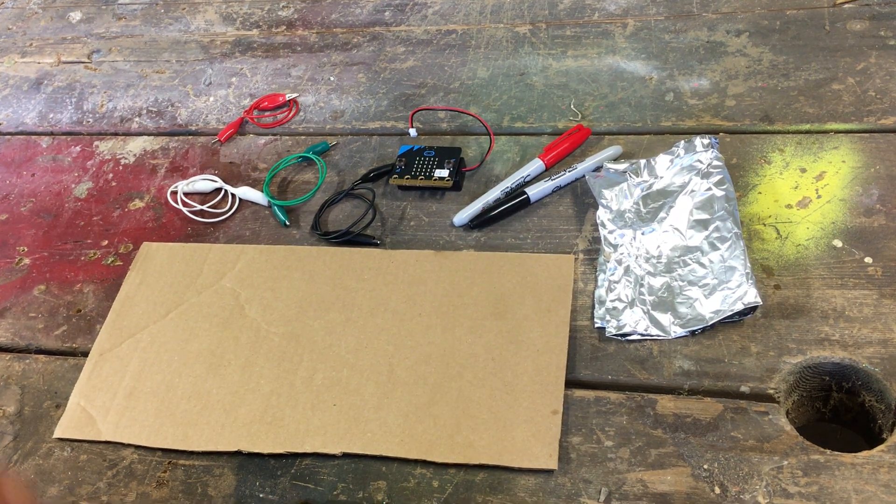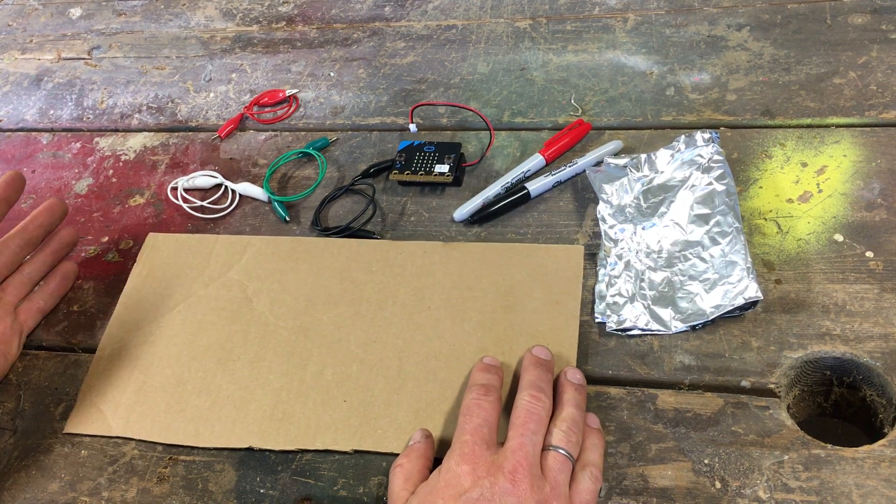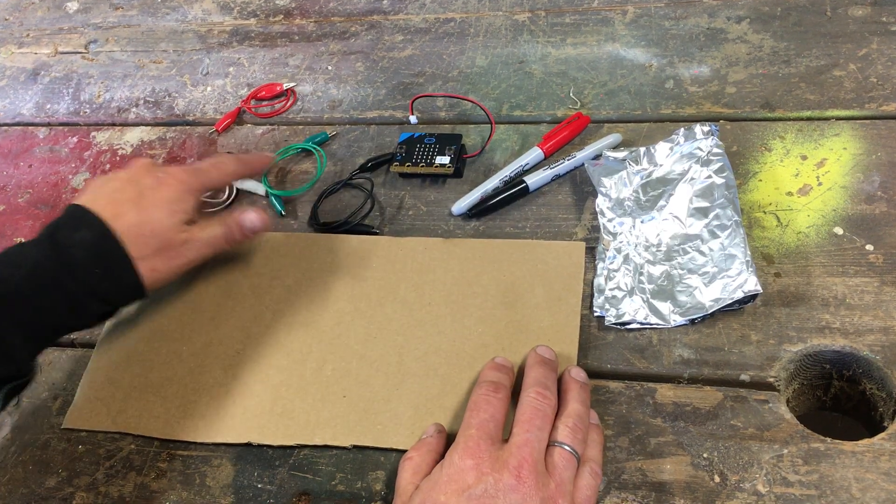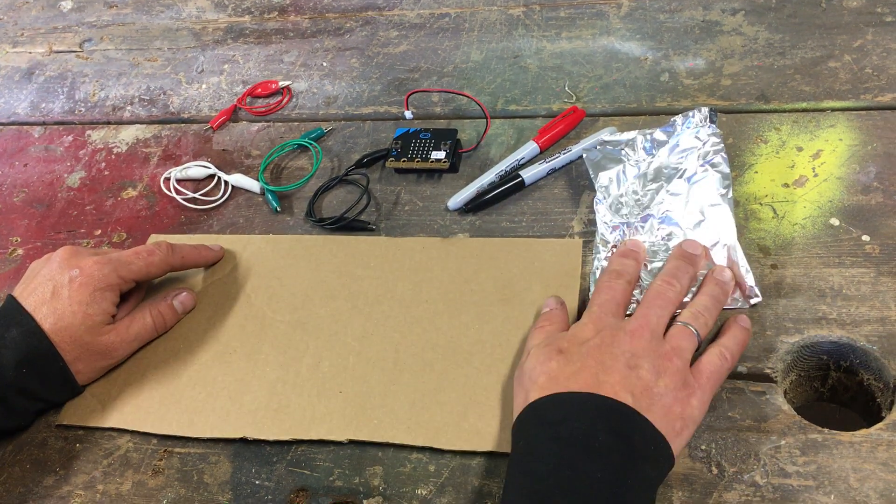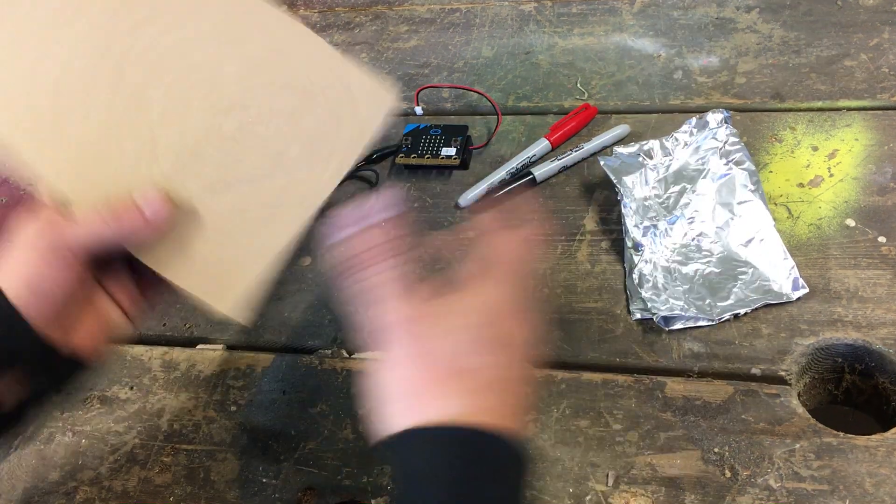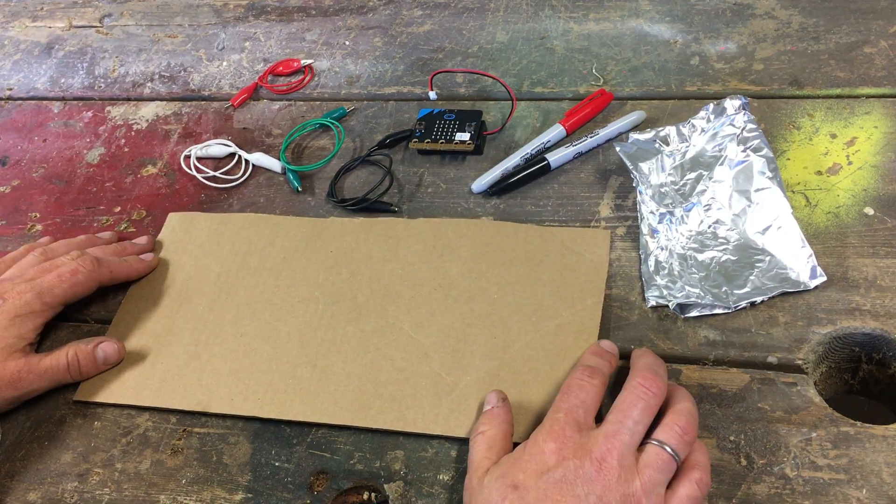Okay, so what are we doing here? We're going to build a reaction game with the micro:bit, four croc clips, a bit of card, foil, and then a cardboard sheet.